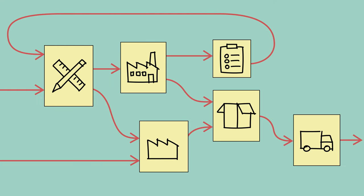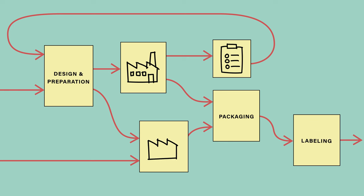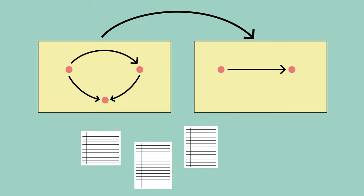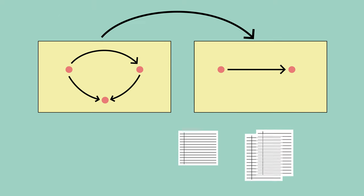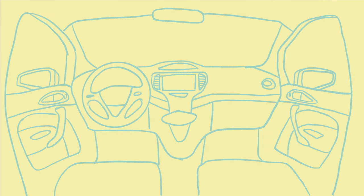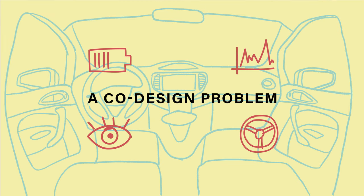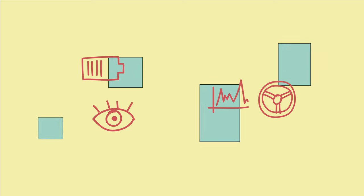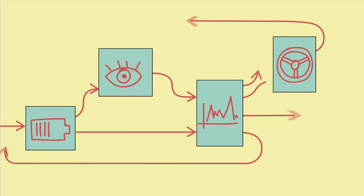The things and relationships in question might be, for example, the steps in a manufacturing supply chain where the relationships are dependencies, or databases where the relationships are coherent transformations of data, or the components of an autonomous vehicle in a co-design problem where the relationships are the resources provided and required by the components.